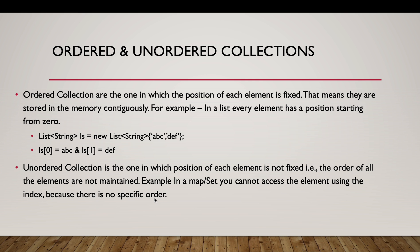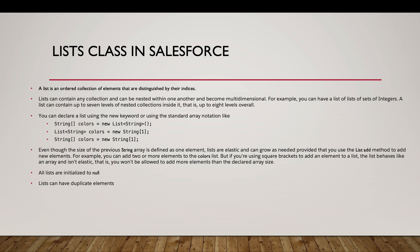For unordered collections, the position of each element is not fixed — they are not stored contiguously and the order is not maintained. In a map or set we cannot directly access an element using an index because there is no specific order. Moving to the list class in Salesforce: a list can contain any collection and can be nested up to seven levels deep.